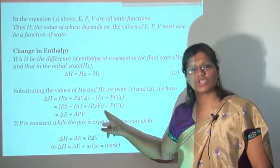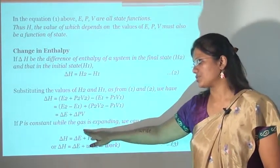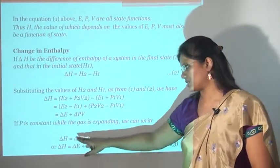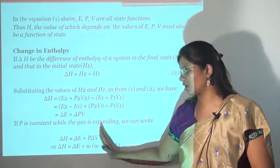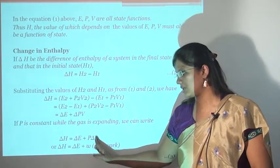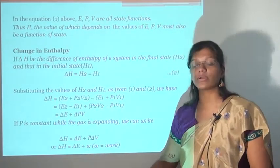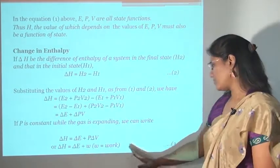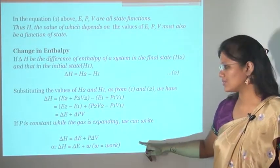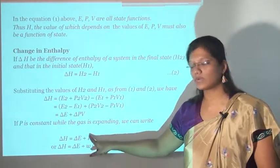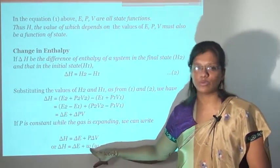If pressure P is constant while the gas is expanding, we can write delta H = delta E + P delta V, where P remains constant. Therefore, delta H = delta E + W, where W = P delta V is the work done. This becomes equation number 3.